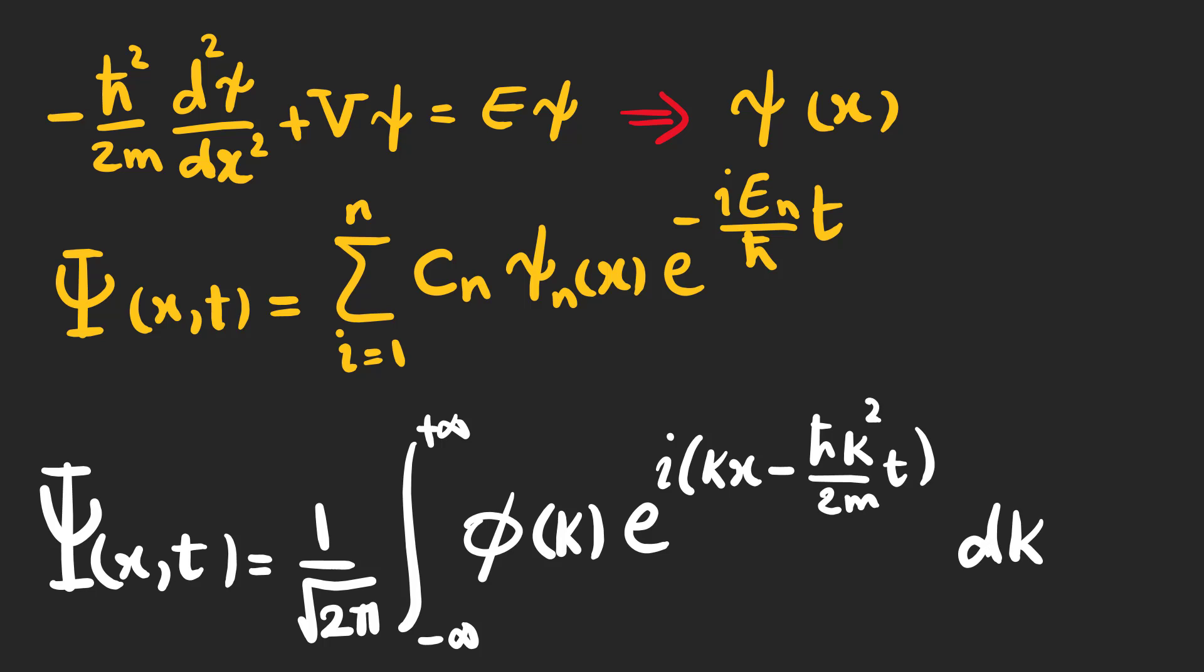So, we used another method in which we used an integral over different k's, instead of summing over different n's. And instead of finding c_n's, we have to find phi of k.